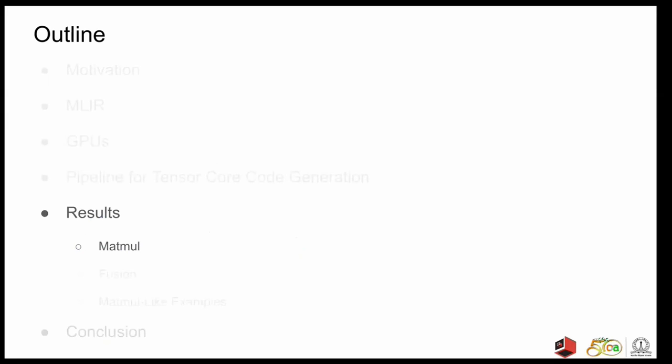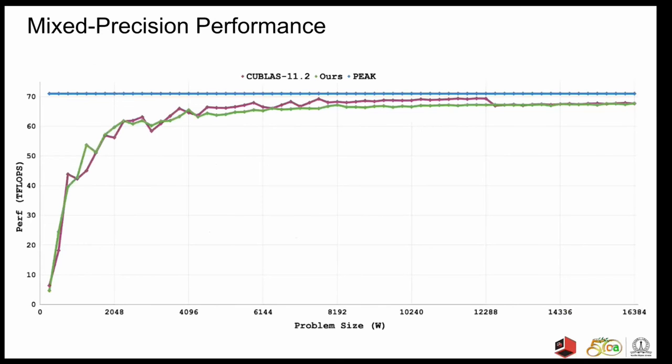So first, we'll be discussing the results of plain matmul. So the plot here shows the performance of our mixed precision matmul kernels on Ampere. The performance is between 0.95 times to 1.19 times of what cuBLAS has to offer. So the purple line here denotes cuBLAS 11.2 and the green line denotes the code generated by MLIR. And the blue line is the peak performance of the device.